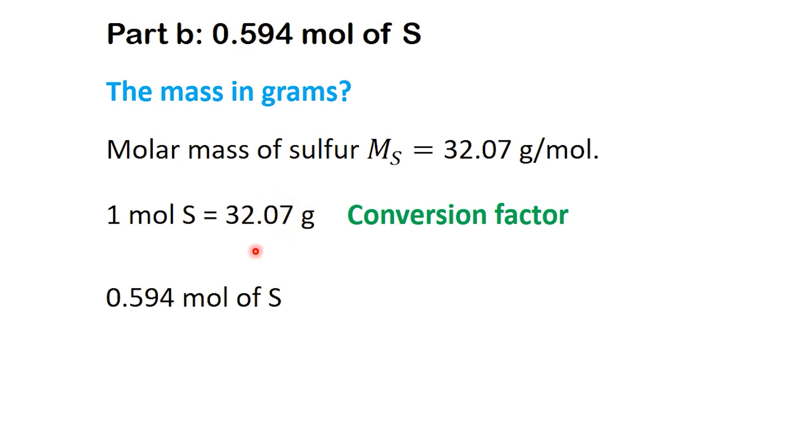Now, let's set up our conversion. We start with the number we're given, 0.594 mole. Then we multiply by the conversion factor, placing moles on the bottom and grams on the top, so the unit mole cancels out. Here's what it looks like.